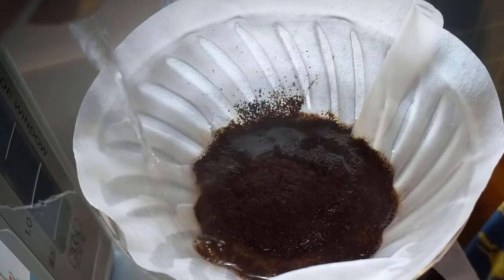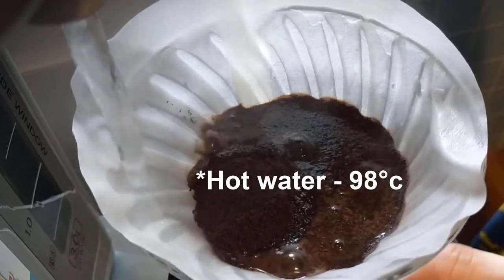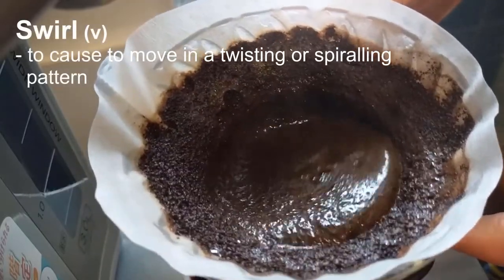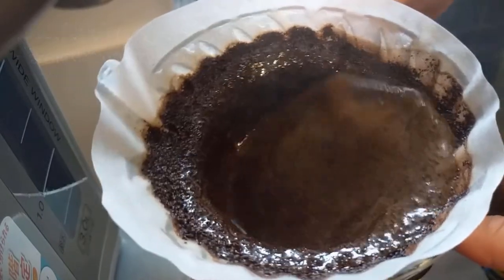Then I start pouring water into the grounds, making sure to wet them all. After the grounds settle down a bit, I swirl the water around in the dripper, keeping the grounds warm and packed at the bottom together.